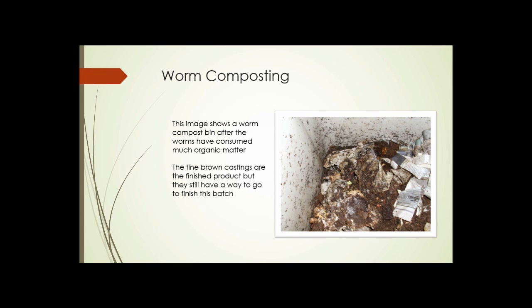Here we see another shot of the worm compost bin. Here you can see at this point there's a lot more worm castings and less bedding, and some new bedding has been added. Notice that it's just moist, not wet. The fine ground castings are the finished product, but that batch still has a ways to go. So that's an alternative method of doing composting in addition to the more traditional methods. And that is the end of this unit.